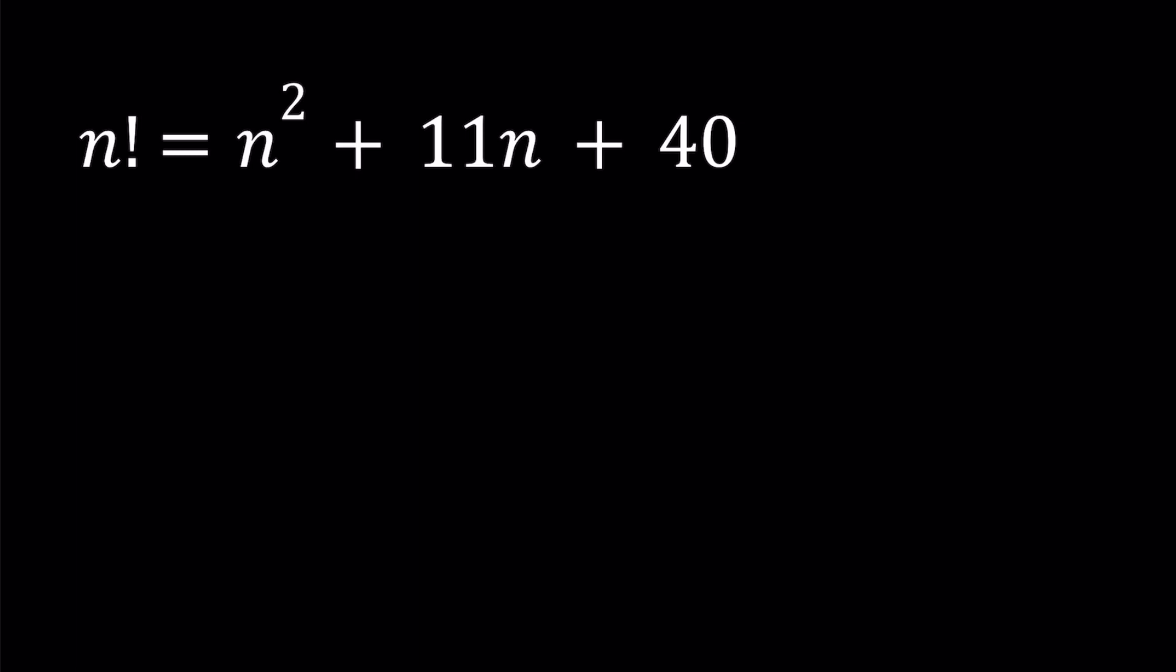n is a non-negative integer here. We're going to be solving for values of n. Let's first notice that n equals 0 does not work. Because if you replace n with 0, you get 40 on the right hand side and 0 factorial which is 1 on the left hand side. So definitely n equals 0 is not a solution.